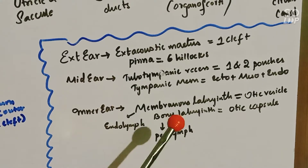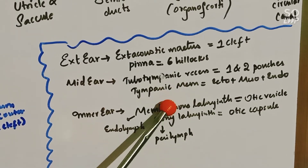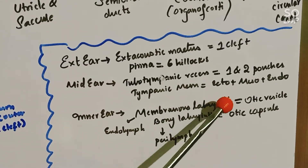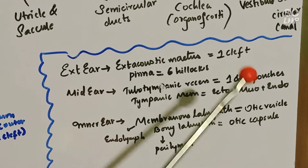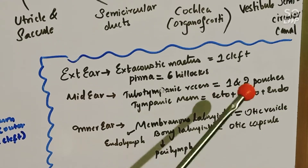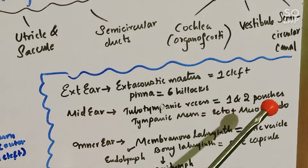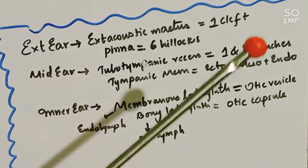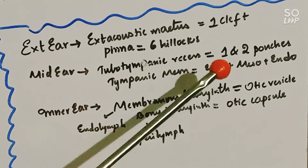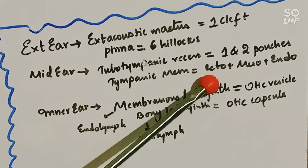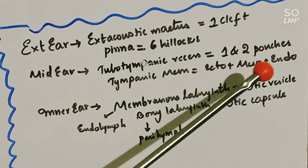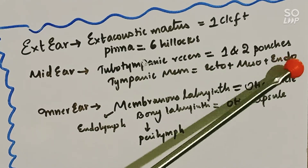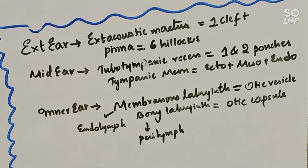Next, we have the tympanic membrane of the middle ear. It is of ectodermal, mesodermal, and endodermal origin. It is made up of ectodermal clefts of the external ear, mesoderm in between, and the endoderm of the pouches of the middle ear.